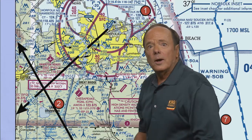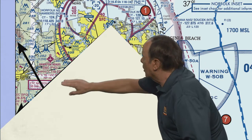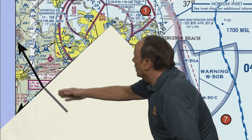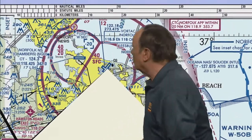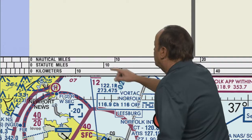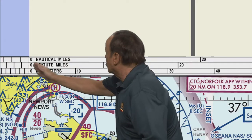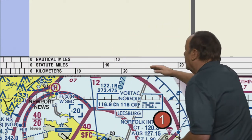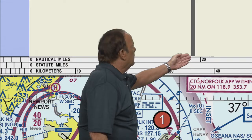Here is how you use that mileage scale. Take a piece of scratch paper and put one corner on the point you want to measure from - in this case the Norfolk VORTAC - then run that edge of the paper along your course and make a mark where the two lines intersect. Now move your paper to the mileage scale for nautical miles. All work on the FAA test uses knots for speed and nautical miles for distance. Put the corner on the zero point - note the zero point is not at the edge, it's in from the edge just a little bit. Then put your pencil mark along the scale, and I get just a little bit around 19 miles.